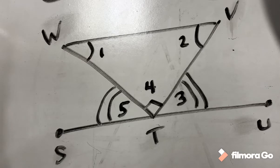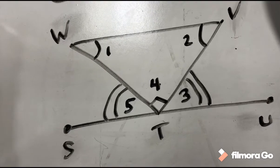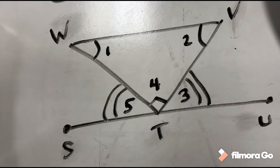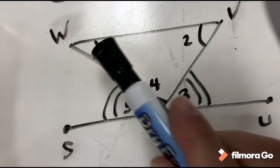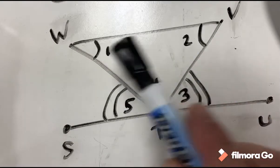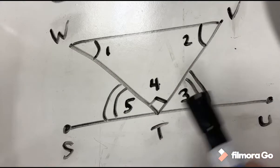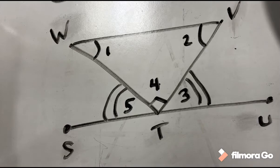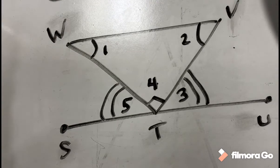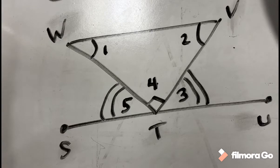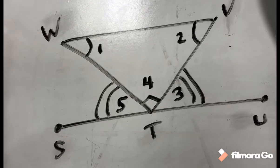In this picture, name all of the pairs of angles that are congruent. In this picture we have two pairs of angles that would be considered congruent: angles 1 and 2 — notice these markings have the same marking — and angles 5 and 3, which would also be considered congruent.